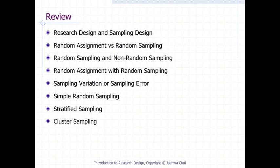5. The concept and example of sampling variation or sampling error. Sampling variation or sampling error is the variation of the sample statistic from sample to sample just by chance factors alone.